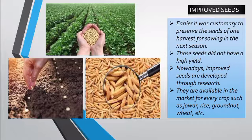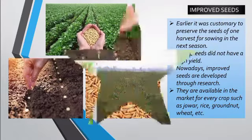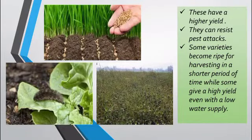Researchers find out which seeds will help grow a better yield of production. That is why improved seeds are now available in the market for every crop such as jowar, rice, groundnut, wheat, and so on. Seeds available in the market after research by agricultural researchers give a higher yield of production.